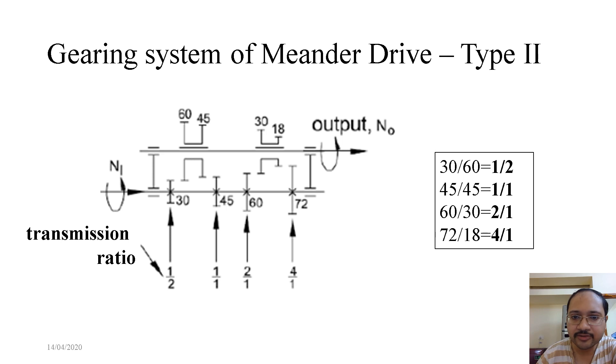Now coming to Type 2 gearing system. What do we observe here from the previous one? The transmission shaft is missing, right? So the input shaft is directly transmitting the torque to the output shaft without the transition shaft in between. So it is even easier to find out the gear transmission ratio.